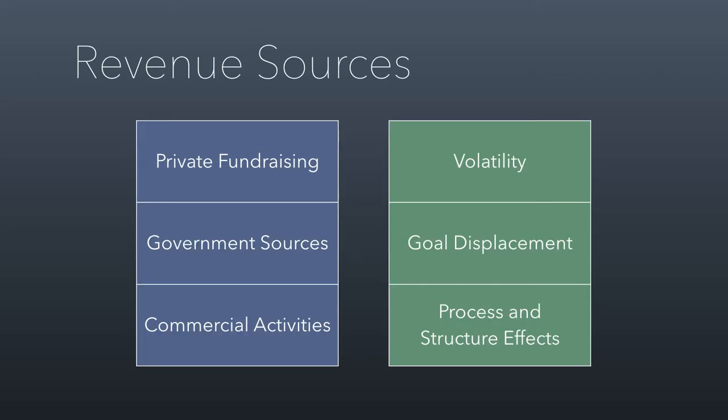This comes from a great study that I really like. Basically, the author looked at three different revenue sources on the left — private fundraising, government sources, and commercial activities — and then looked at how much volatility was introduced from these funding sources, whether or not the goals in the nonprofit were displaced by these funding sources, and also looked for any process and structure effects and how nonprofits change the way they operate.